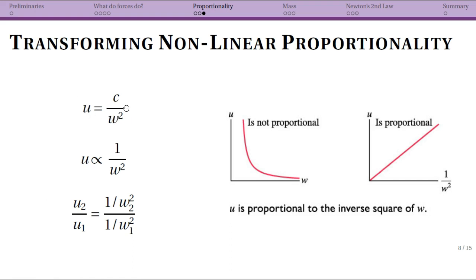So if we just look at a plot, it doesn't look proportional. We don't see that nice straight line. But what we can say is that u is proportional to 1 over w squared.